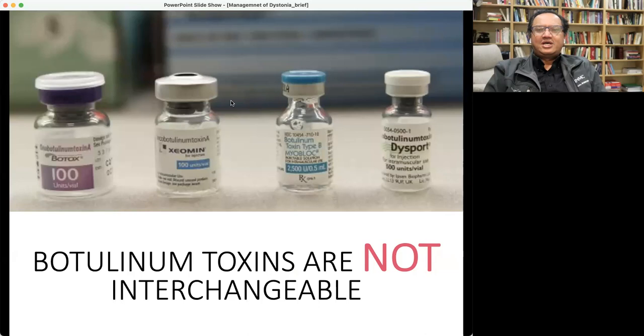There are multiple types of botulinum toxin in US. The FDA approved toxins, there are four different types and they are not interchangeable because they have various strengths. So a hundred units of Botox, a hundred of Xeomin, but 2,500 units of Myobloc and 500 units of Dysport, and they are not interchangeable one to one.